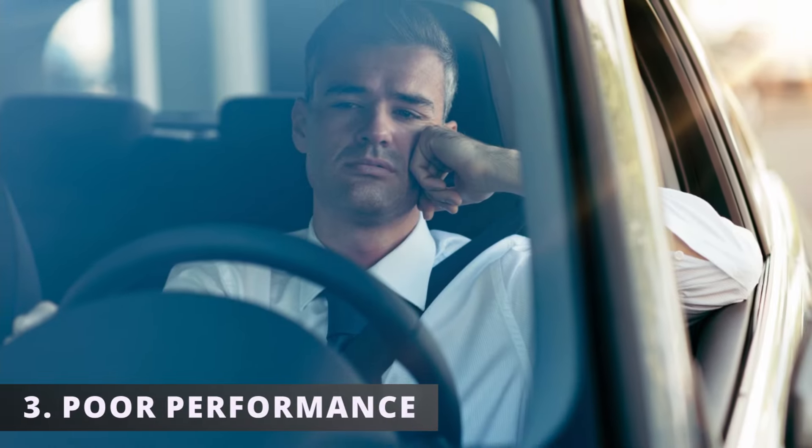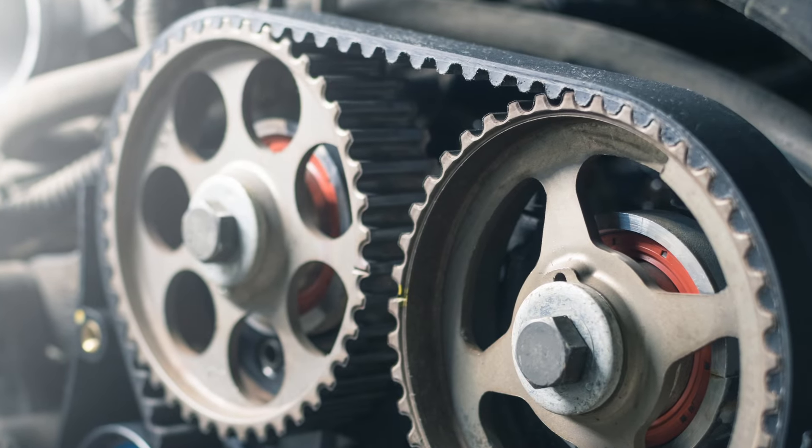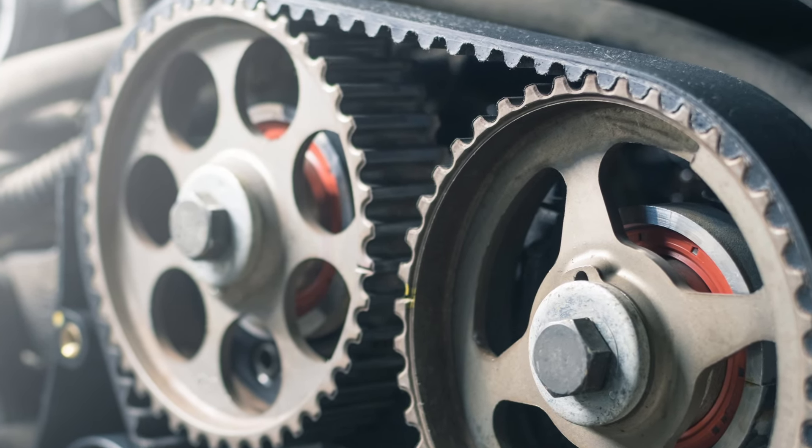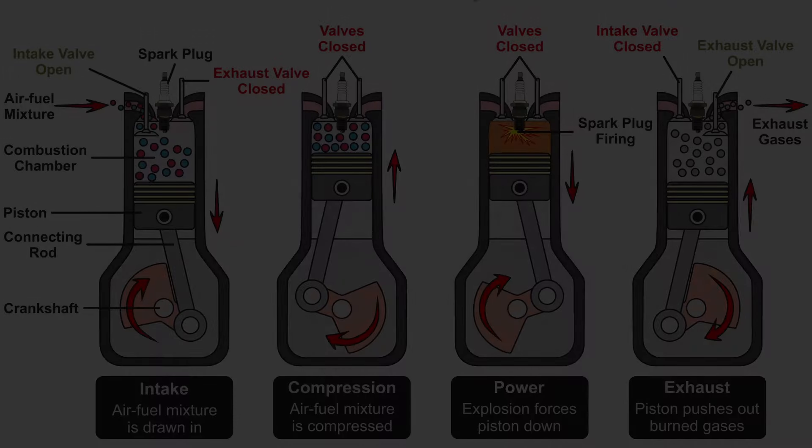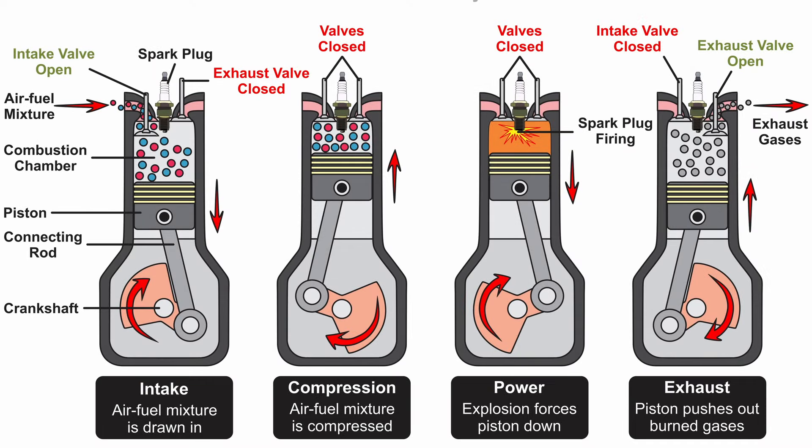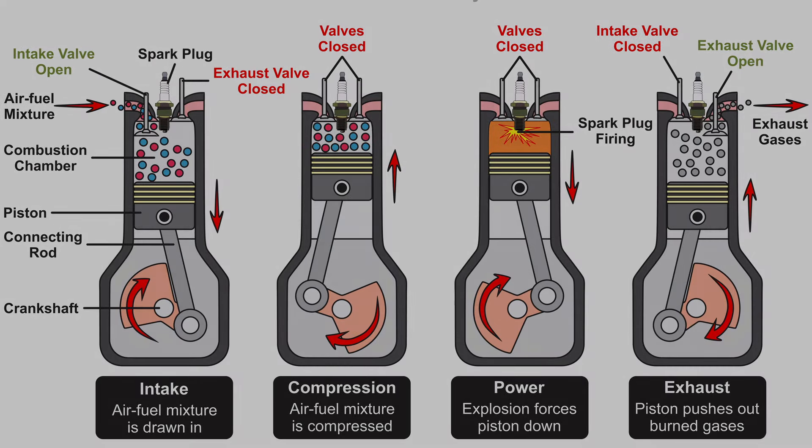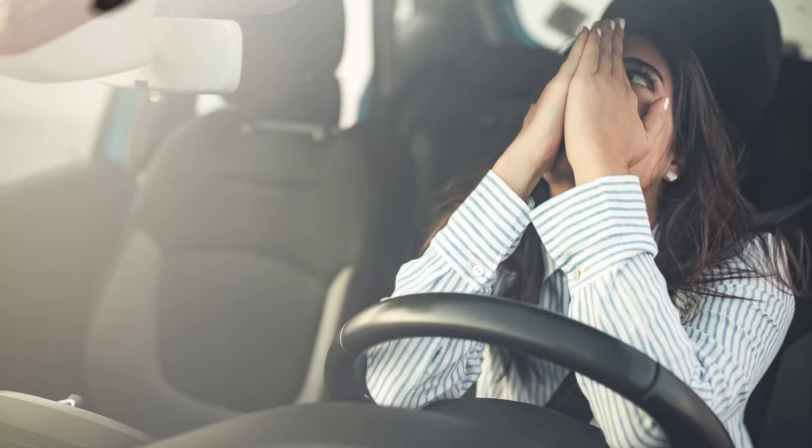The third symptom is poor performance. A stretched timing belt or chain could eventually lead to skipping a tooth on one of the sprockets. This changes the timing, resulting in the valves opening and closing at the wrong time during the four stroke cycle. This is why your car's losing power.